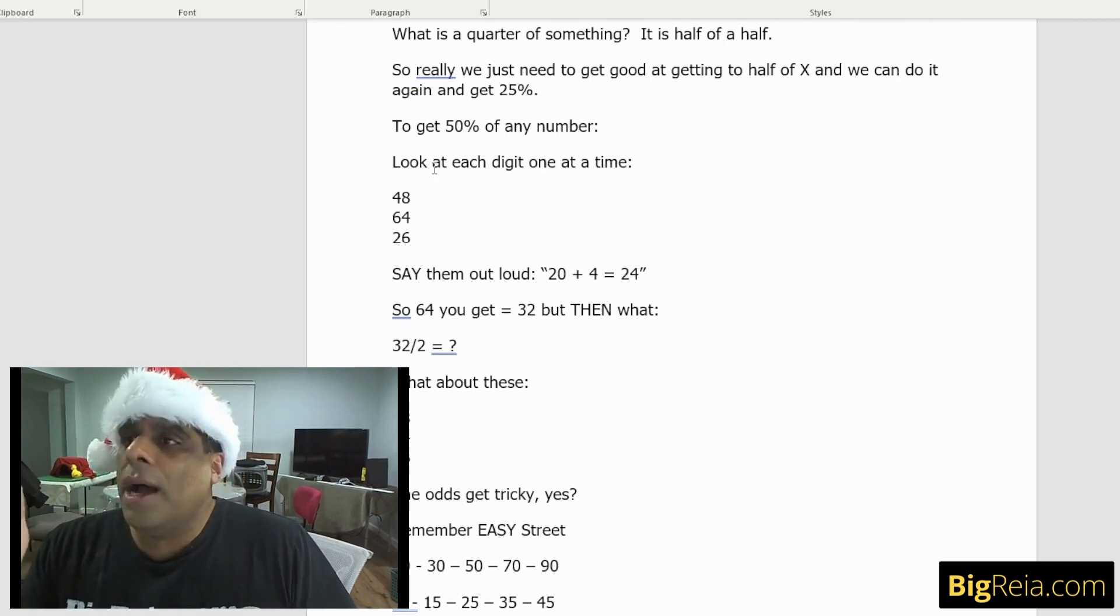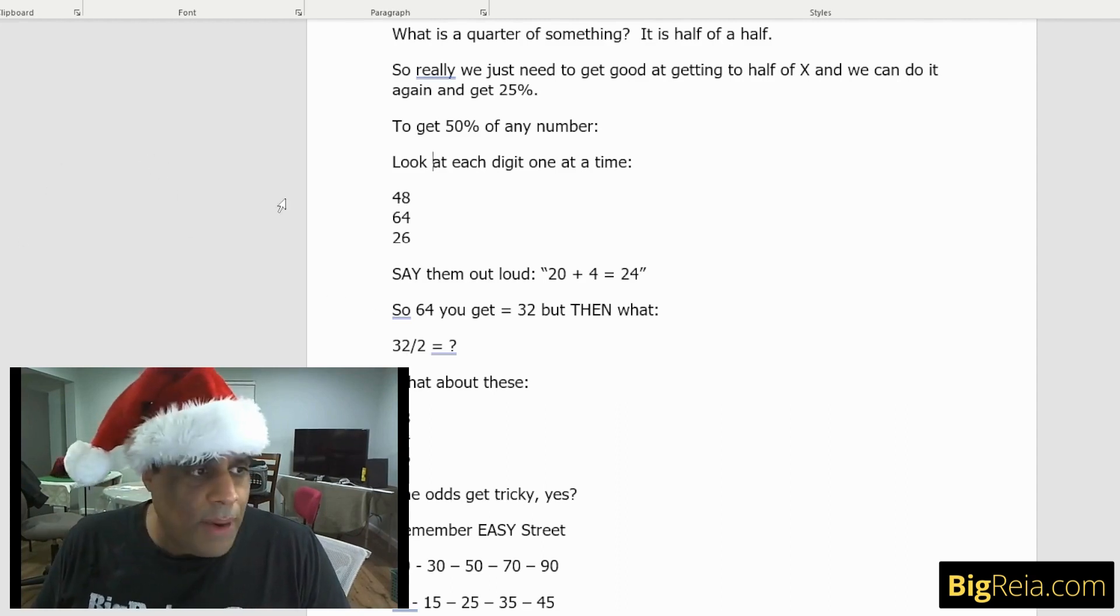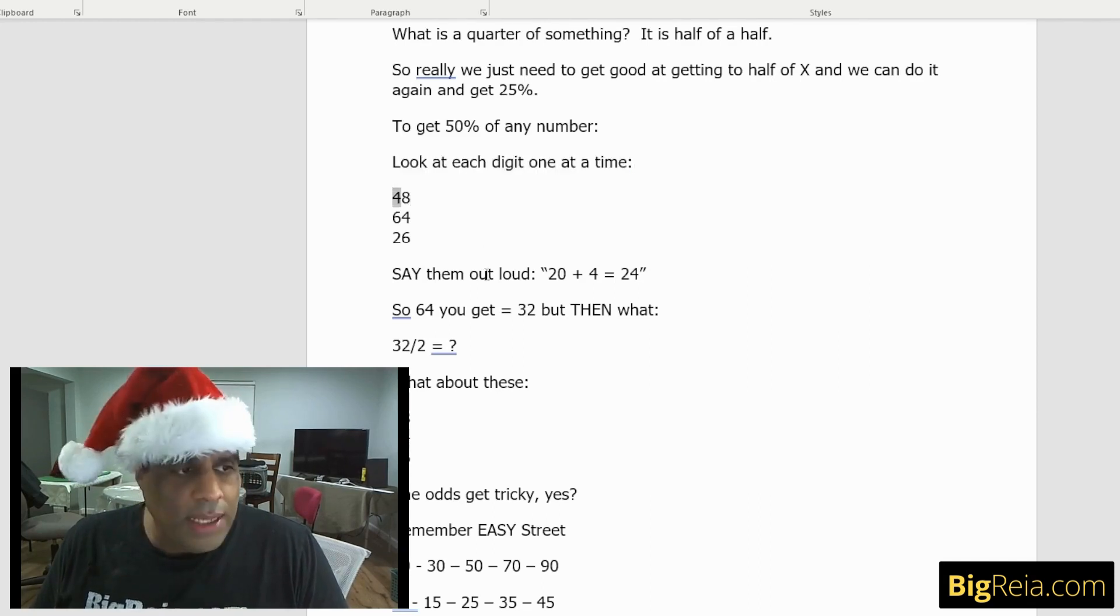We chunk things up. The most important part about any of these tests is that you take complicated things and you make them into very simple things. So the best way to do that is to break up these numbers. Look at these numbers, 48 for example, just look at the four. What's half of four? Two. What's half of eight? Four. Very easy. 24.